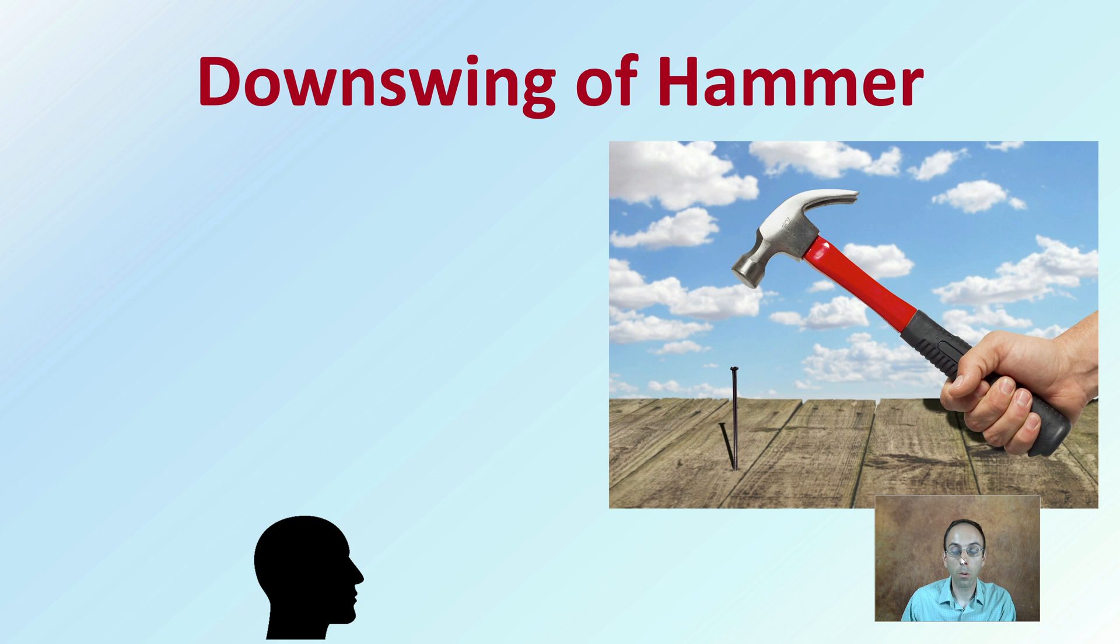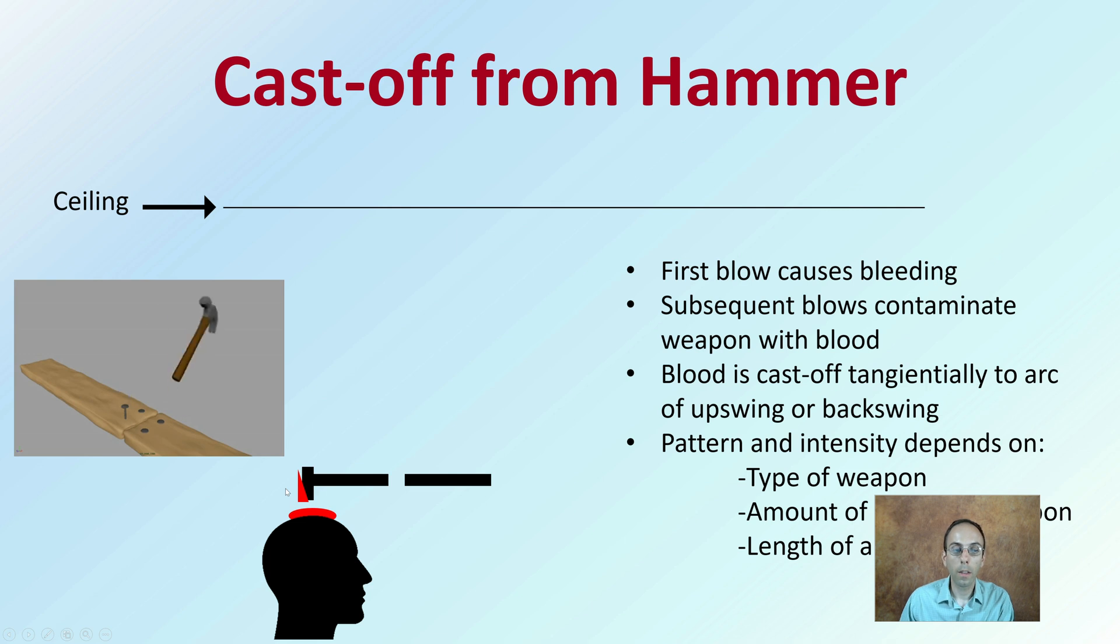Let's take an example of a downswing of a hammer. We have a hammer and a downswing coming in contact with the person's head, causing a pooling of blood. Then we have the hammer coming back, and as it comes back, this is where the cast-off of blood is occurring.